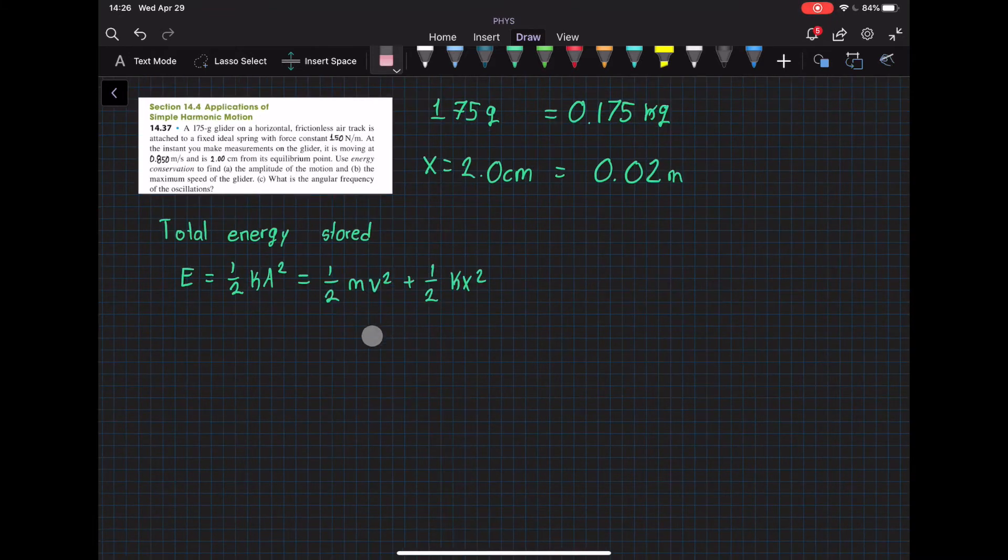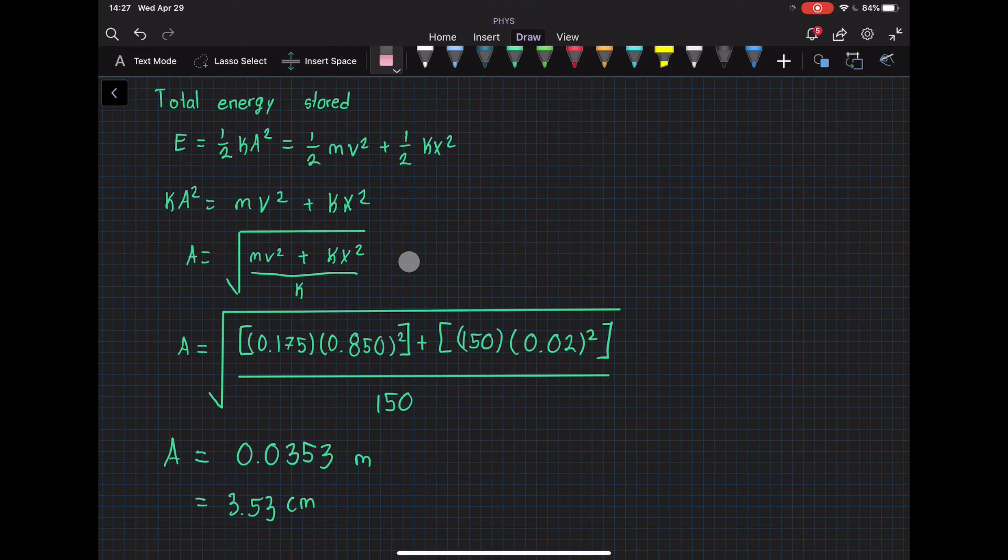Which is also equal to this, and based on this we can solve for the amplitude. That way we can solve part A. After solving for the amplitude in this equation, we plug in the numbers and we get an answer of 0.0353 meters.